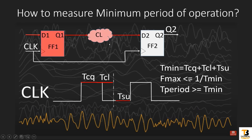Friends, I created an animated video to explain how to measure the minimum time period of operation for a complex design. It's a very small video of 3 minutes. I think all of you should go through it before coming into this video. I will give its link in the description section as well as in the eyeball section. Here I am keeping the crux of that video — this is the critical path in that complex design which is responsible for calculation of minimum time period of operation.